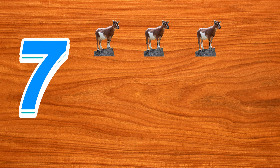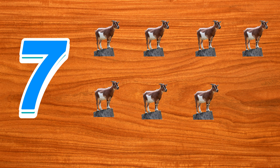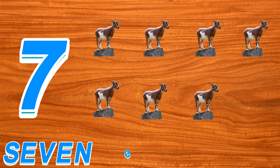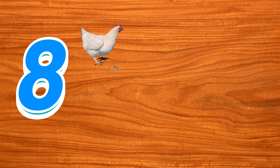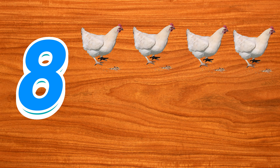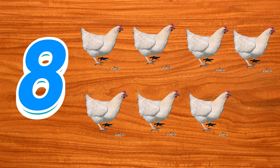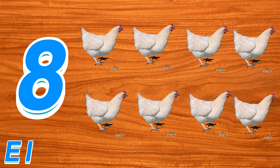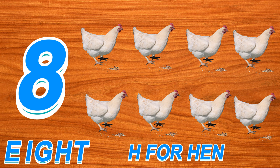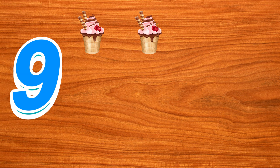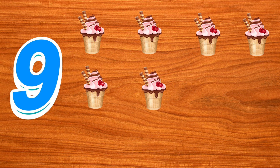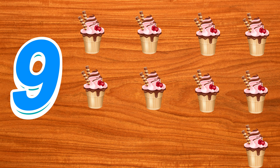7 1 2 3 4 5 6 7 S-E-V-E-N. 7 G for Goat. 8 1 2 3 4 5 6 7 8 E-I-G-H-T. 8 H for Hen. 9 1 2 3 4 5 6 7 8 9 N-I-N-E.